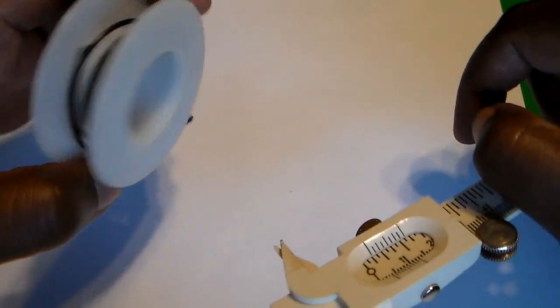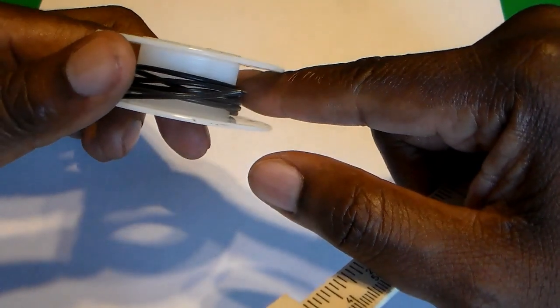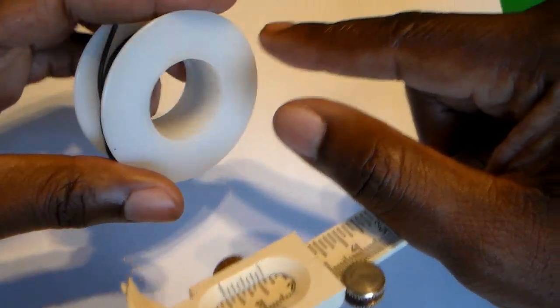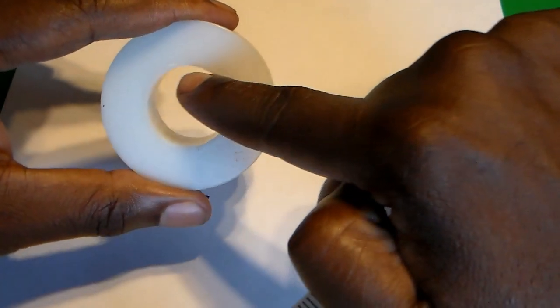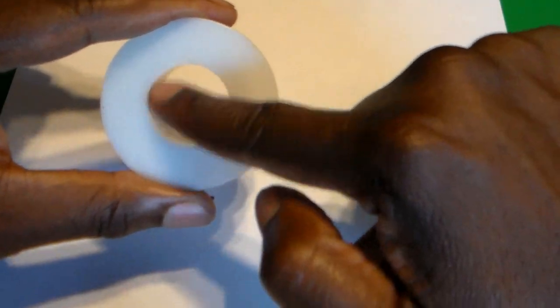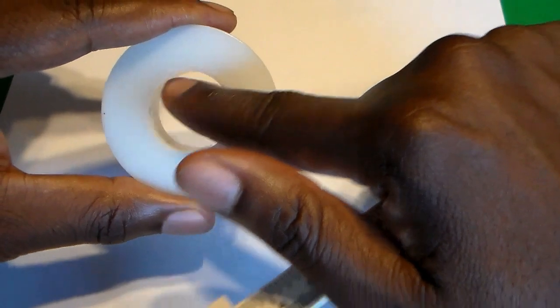Okay, so let's say I have an item. Right here I have a spool of wire and for this spool of wire, let's say I wanted to figure out what the inner diameter of this spool of wire is.